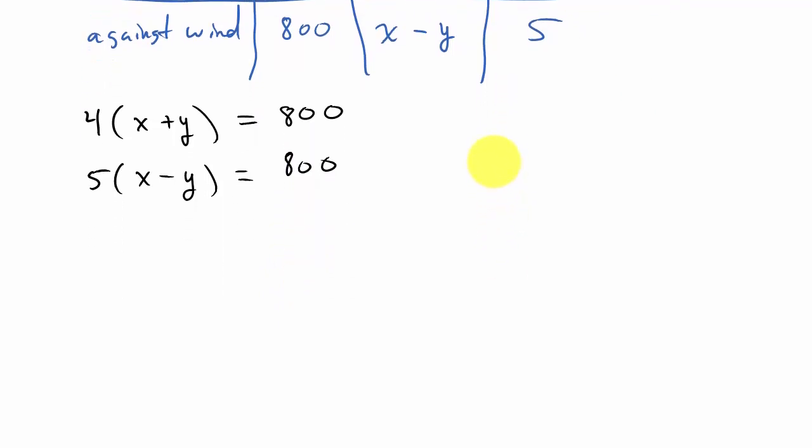Now, let's go ahead and distribute the four, distribute the five. So that's going to give us 4x plus 4y equals 800, and 5x minus 5y equals 800. Now we've got a simple system of equations to solve.